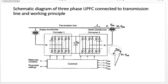The series voltage source converter provides the main function of the UPFC by injecting a voltage with controllable magnitude and phase angle in series with the line through the injection transformer. This injected voltage acts as a synchronous AC voltage source. The transmission line current flows through this voltage source, resulting in reactive and active power exchange between it and the AC system. The reactive power exchanged at the AC terminal is